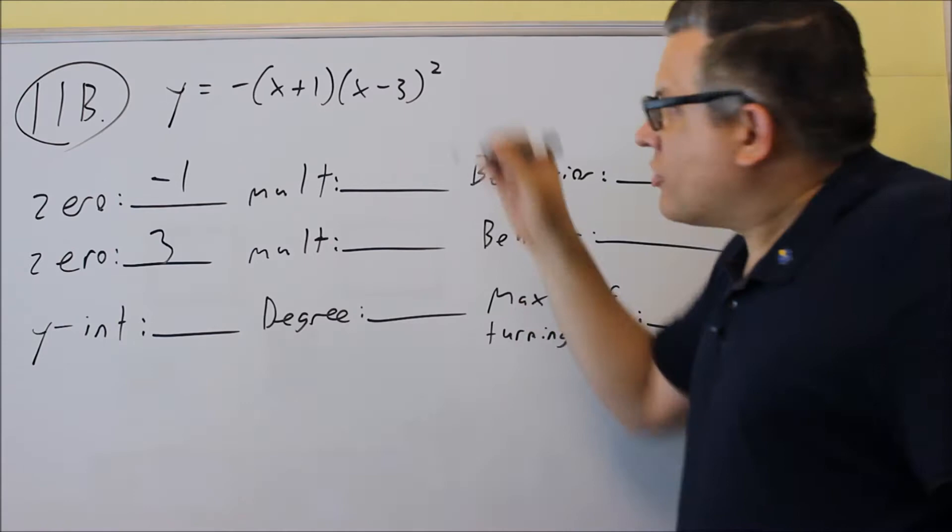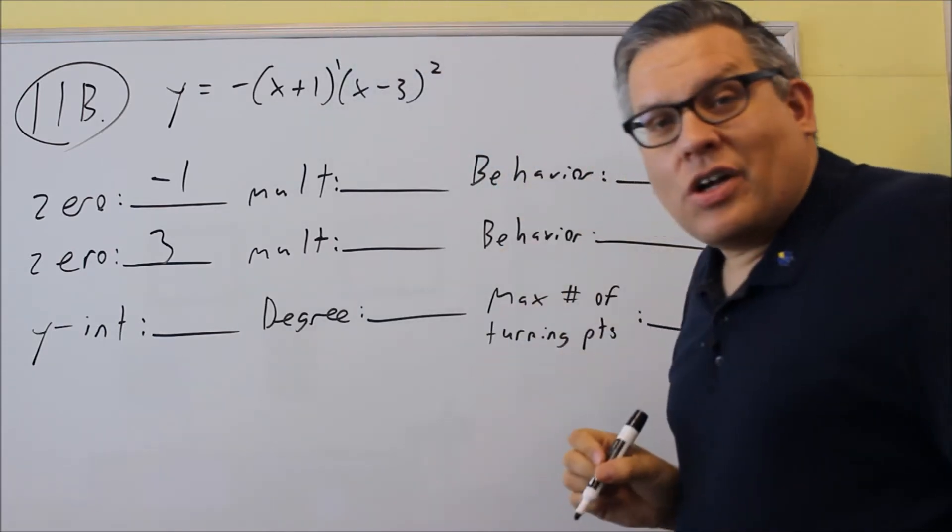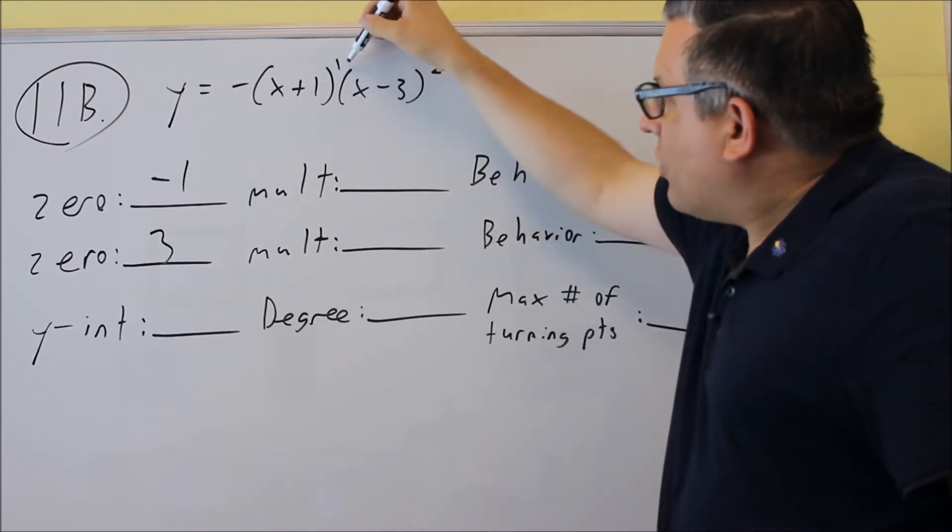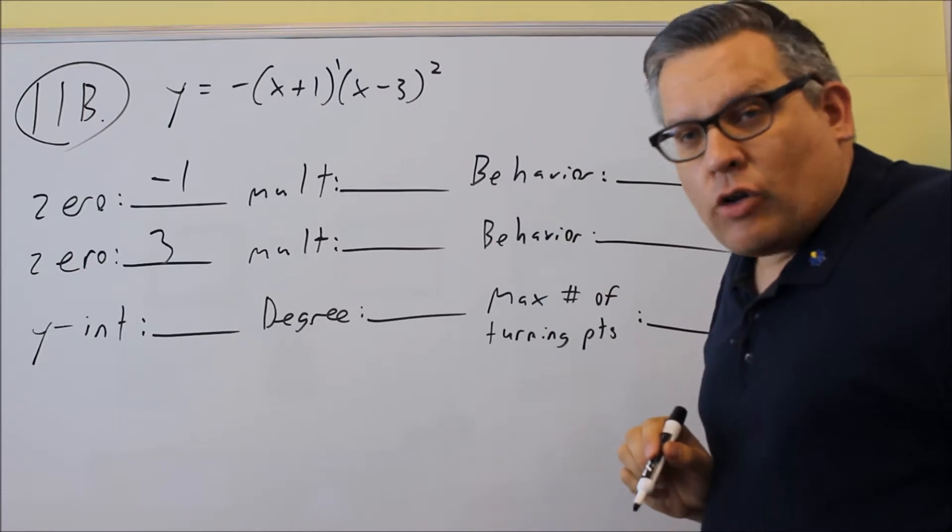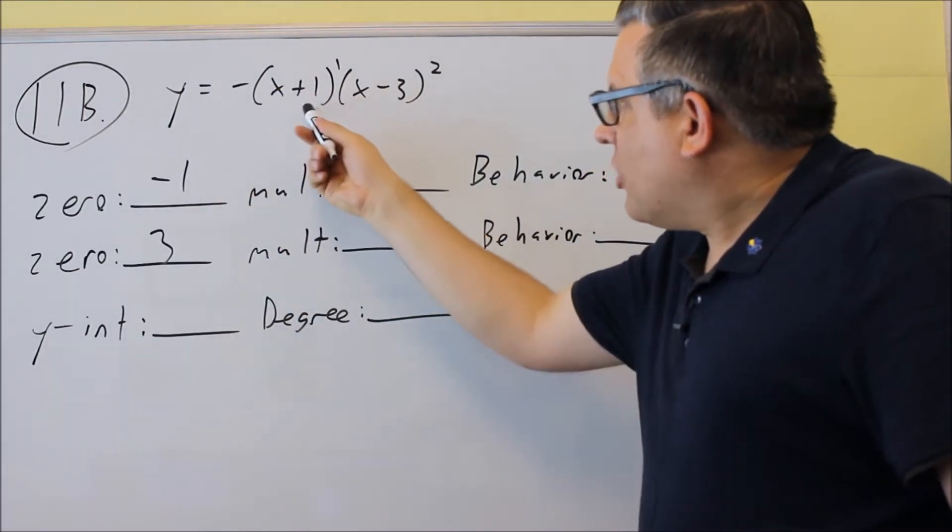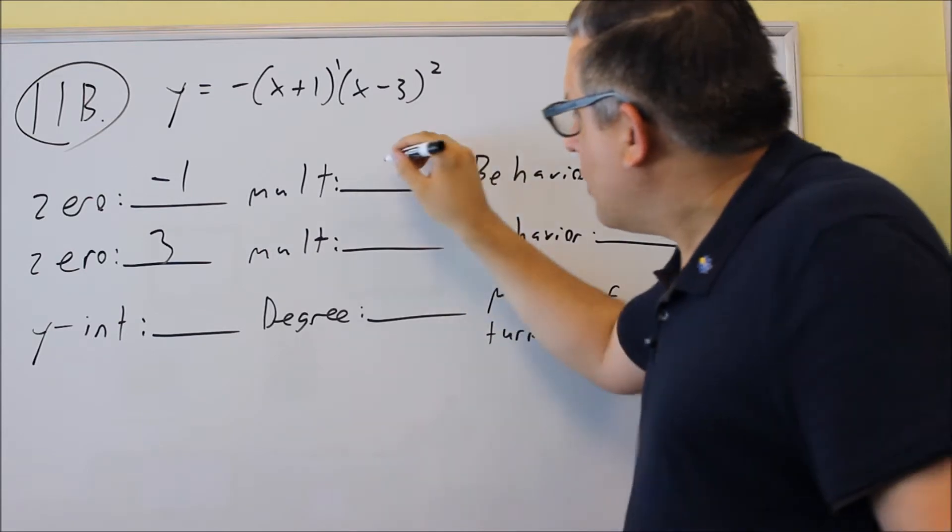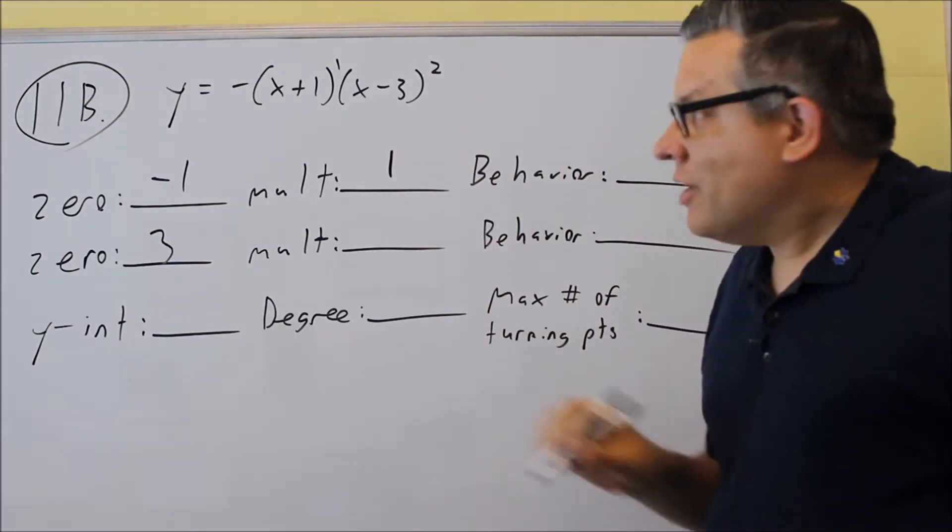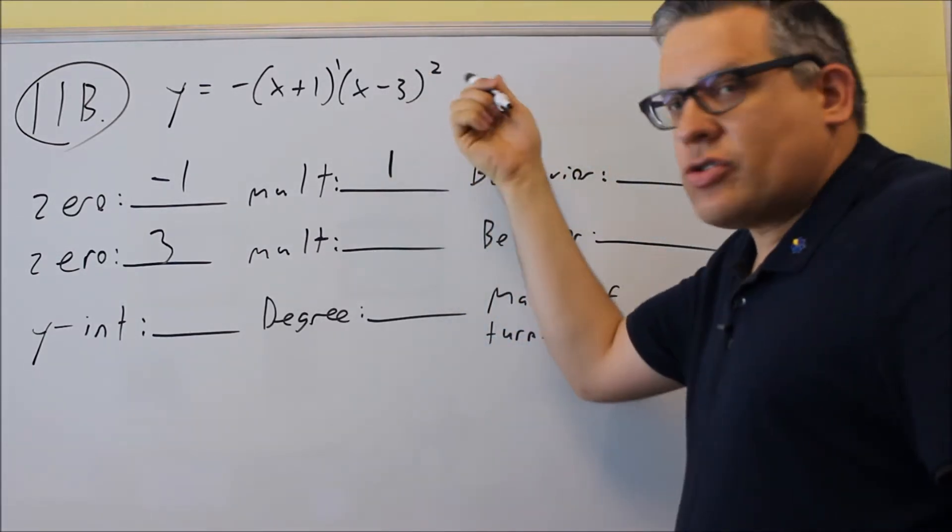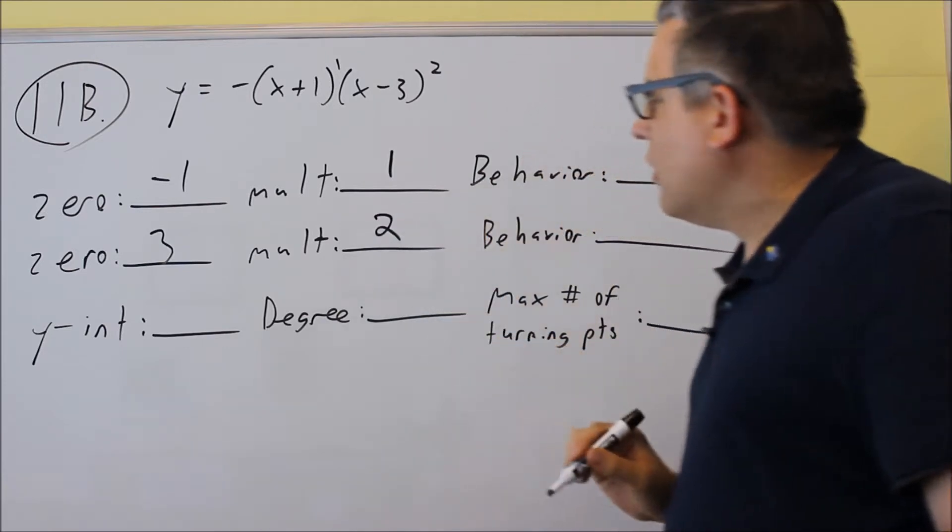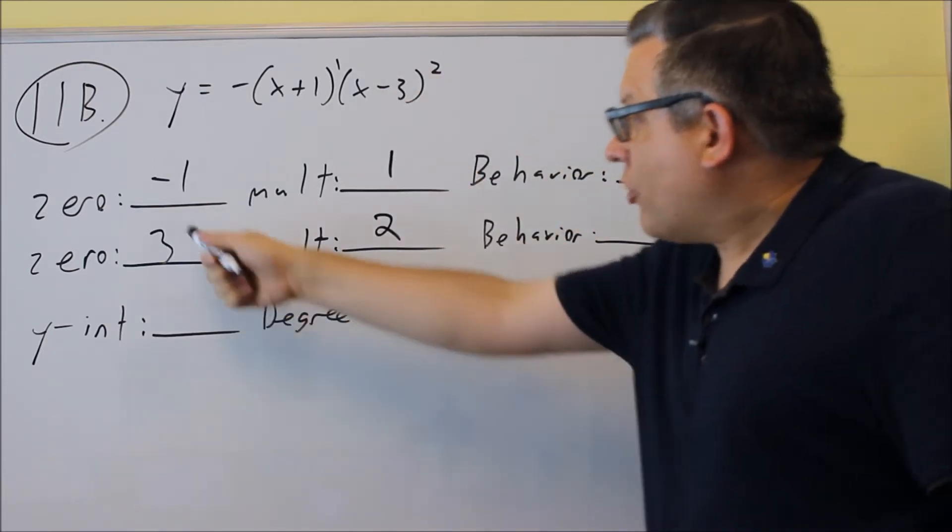The multiplicities are the powers attached to each of the factor pieces. If you don't see anything there, we know it's going to be a power of one. So the negative one comes from this piece here that has a power of one, so the multiplicity is one. The second piece has a power of two, that's your multiplicity for the second piece, the factor where the three came from.